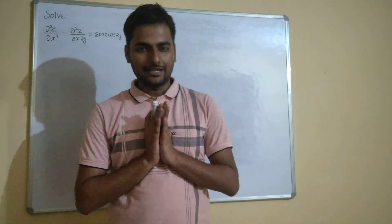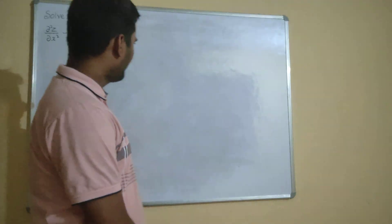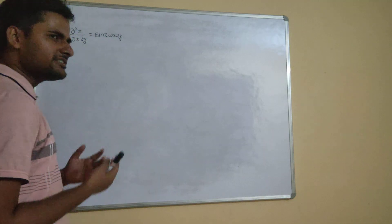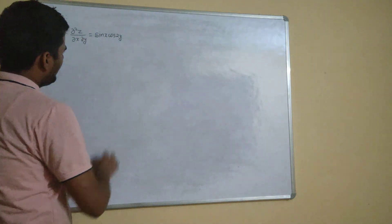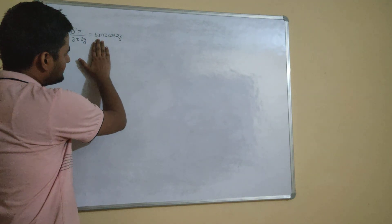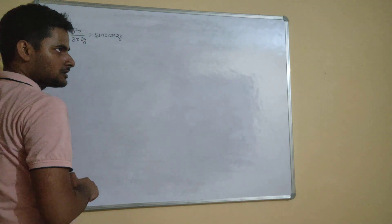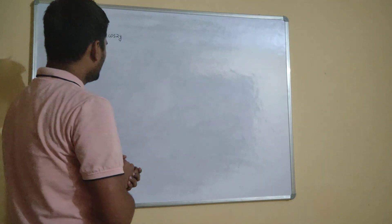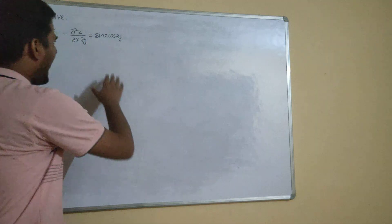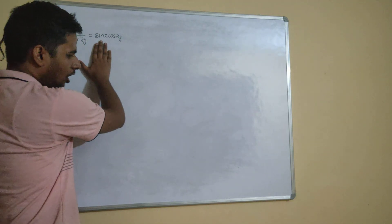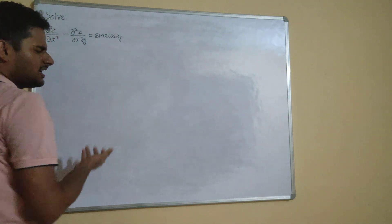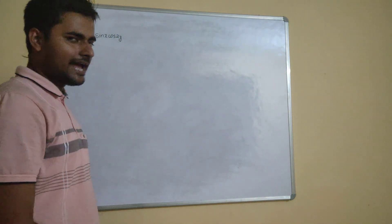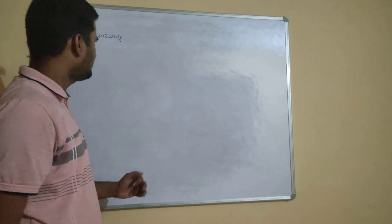Hello everyone. Let's solve one more question from partial differential equations. What's new to learn from this question? When you have terms in both sine and cosine, how do we solve since we don't have a direct formula? We convert it either in terms of sine or cosine alone, and then for sine(ax+b) or cos(ax+b), we have a method to find the particular integral.